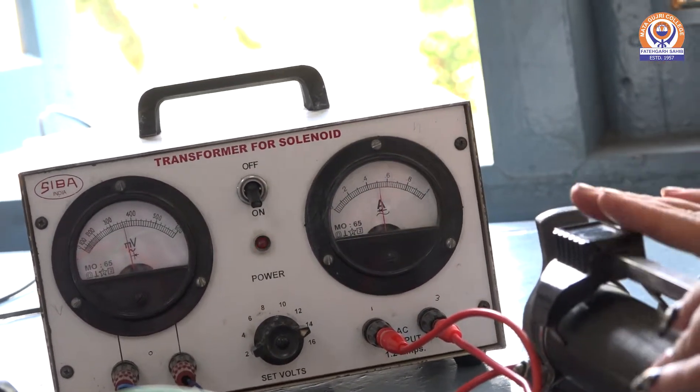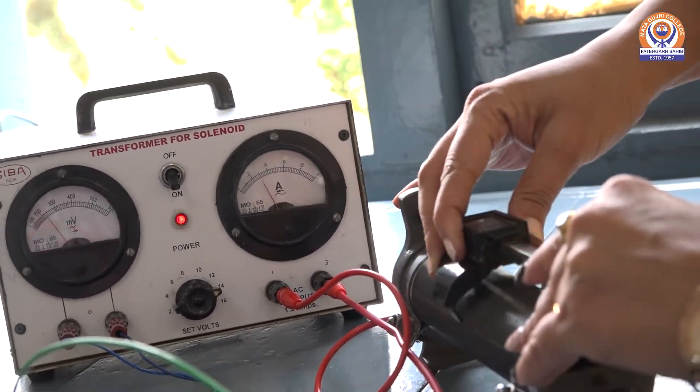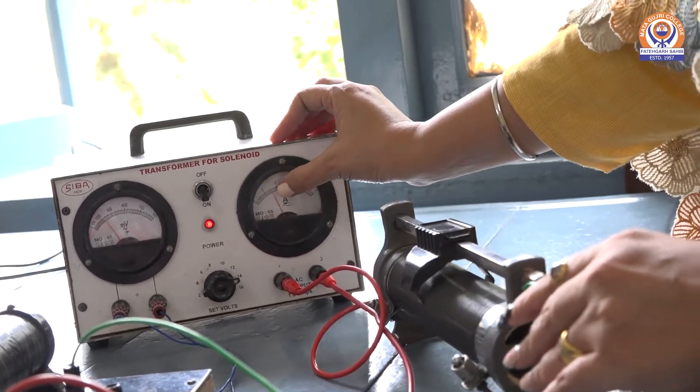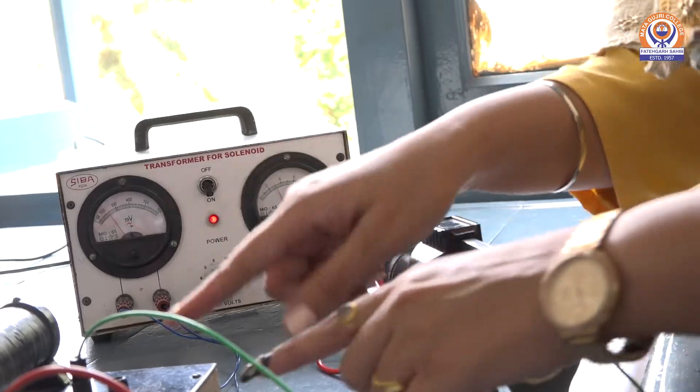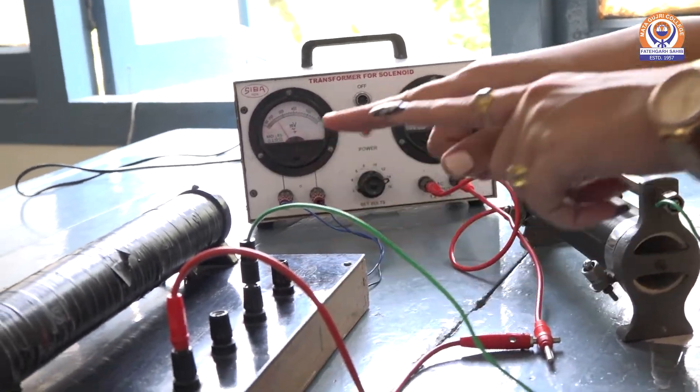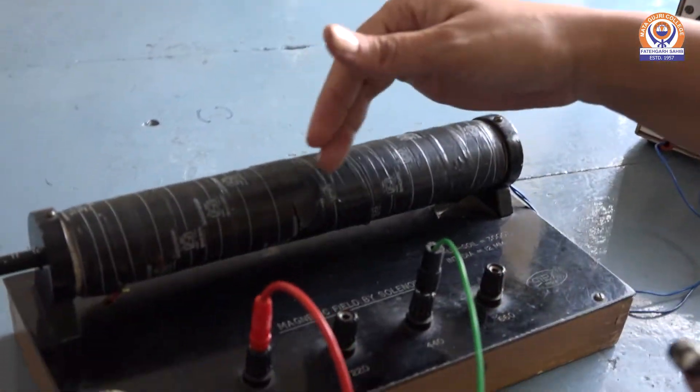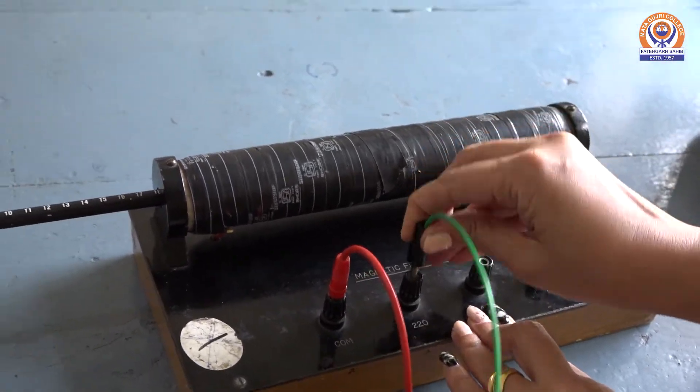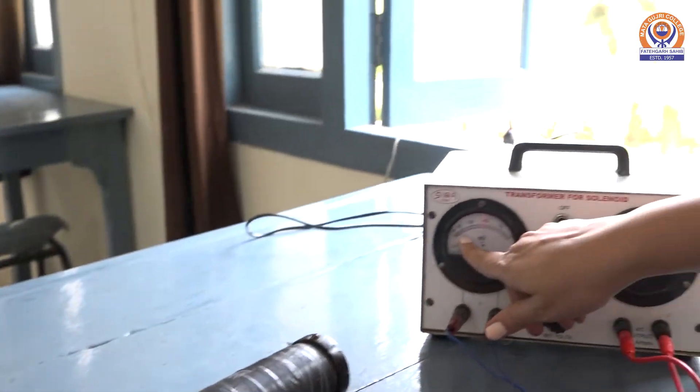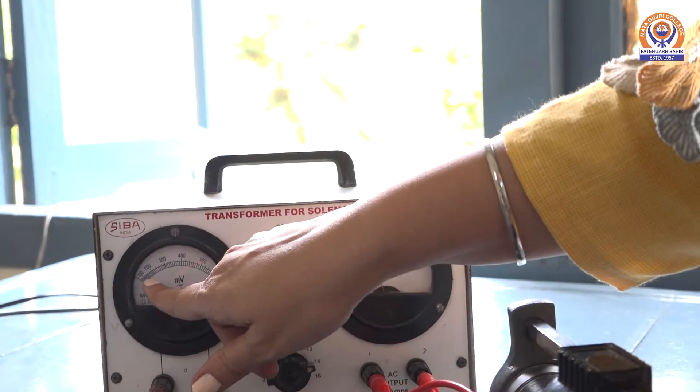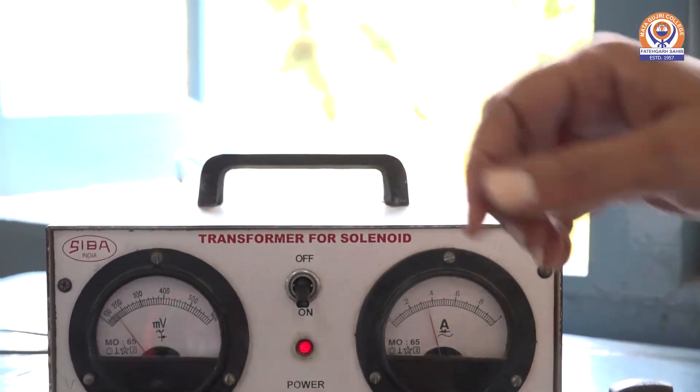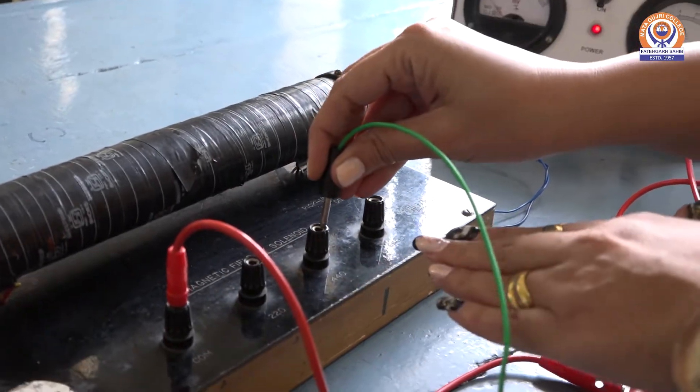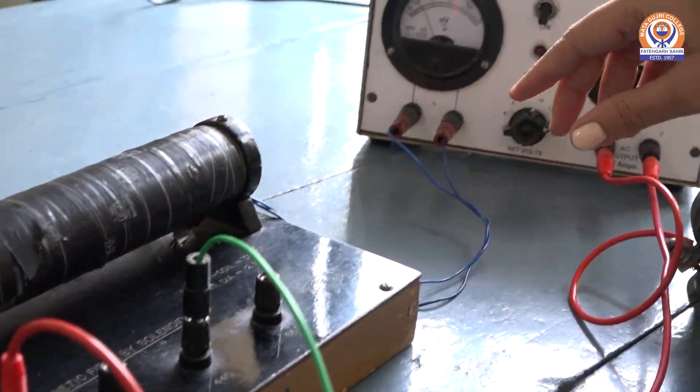In our second part, we will keep this current fixed. I am fixing it at 0.3 ampere and I am changing the number of turns. Now we will see the effect of number of turns on the magnetic field. When it is 220, the induced EMF is around 100 millivolt. When I connect this terminal to the 440 number of turns, it is increased to 200.